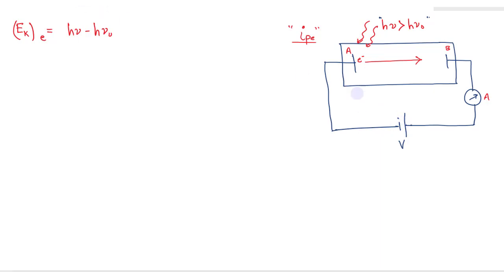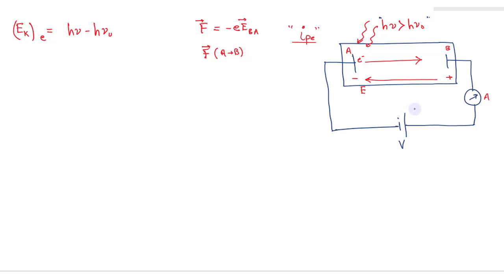Let's look at the role of this voltage source. B is positive and A is negative, so this voltage source creates an electric field E between the plates due to the potential difference. Since the electron has a negative charge, the force on the electron is F = −eE. If the electric field is directed from B to A, the force acts from A to B, so this potential source takes the electron from A and passes it to B, completing the circuit and allowing current to flow.